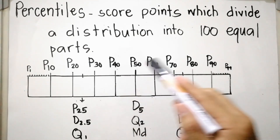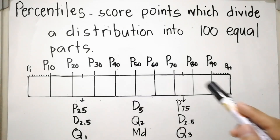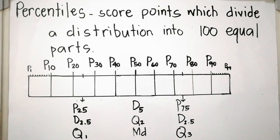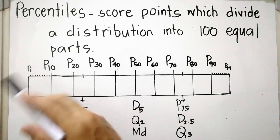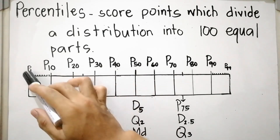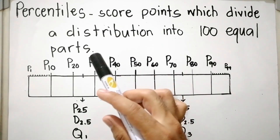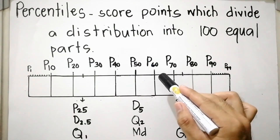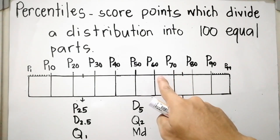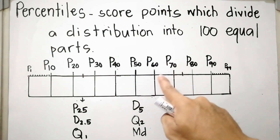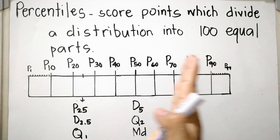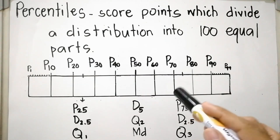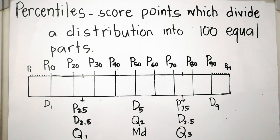Since the distribution is divided into 100 equal parts, each part contains one percent of the data distribution. If we are going to interpret, let's say P sub 1: one percent is less than or equal to P sub 1, and 99 percent is greater than or equal to P sub 1. For another example, between P sub 60 and P sub 70, let's say P sub 61: 61 percent is less than or equal to P sub 61. That is the interpretation for the percentile.